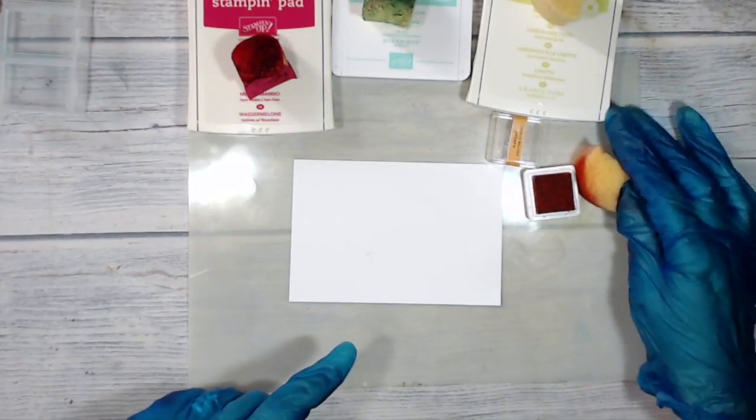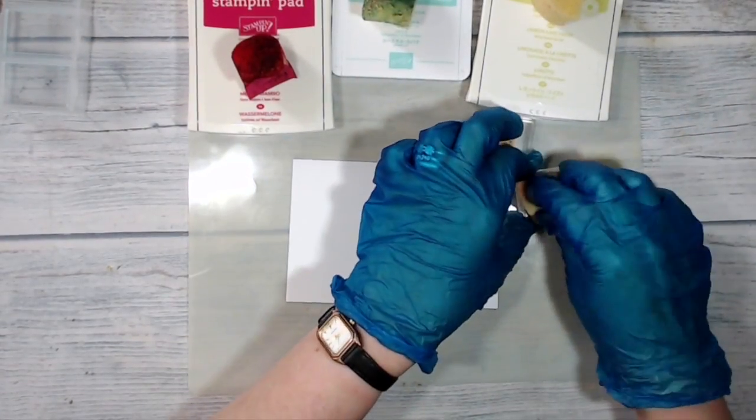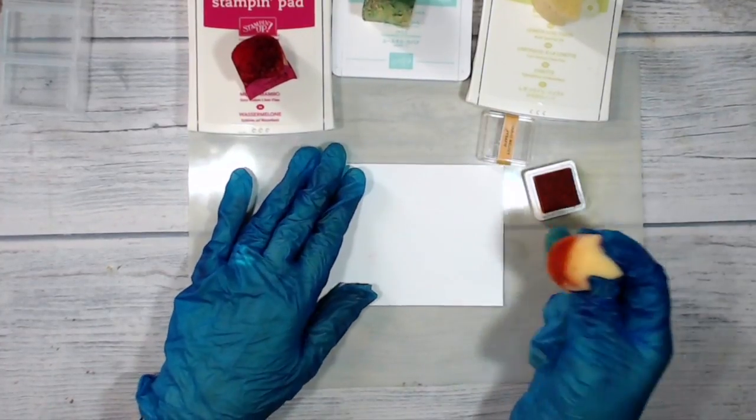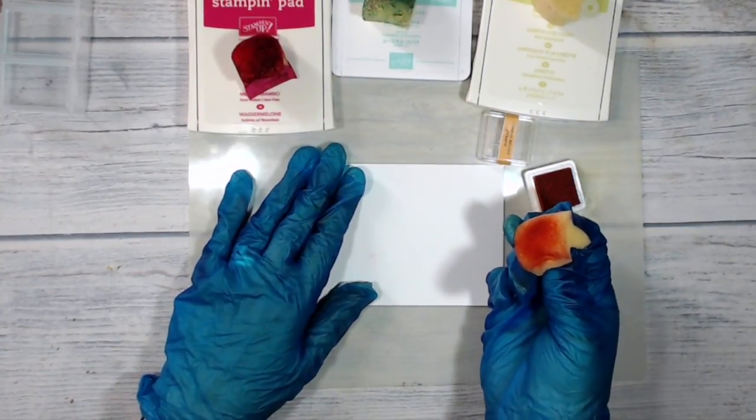I've got my inks and my sponges ready and I'm just going to sponge over my piece of whisper white card and I'm just going to lay down spots of color.